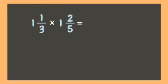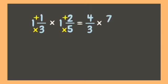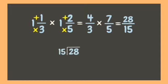Let's have another example. First step: change the mixed numbers into improper fractions. Three times one is three, plus one is four — over three. Five times one is five, plus two is seven — copy the denominator five. Now multiply: four times seven is twenty-eight, three times five is fifteen. Since it is an improper fraction, we convert it: 28 divided by 15 is one, one times fifteen is fifteen, twenty-eight minus fifteen is thirteen. Our final answer is one and thirteen-fifteenths.